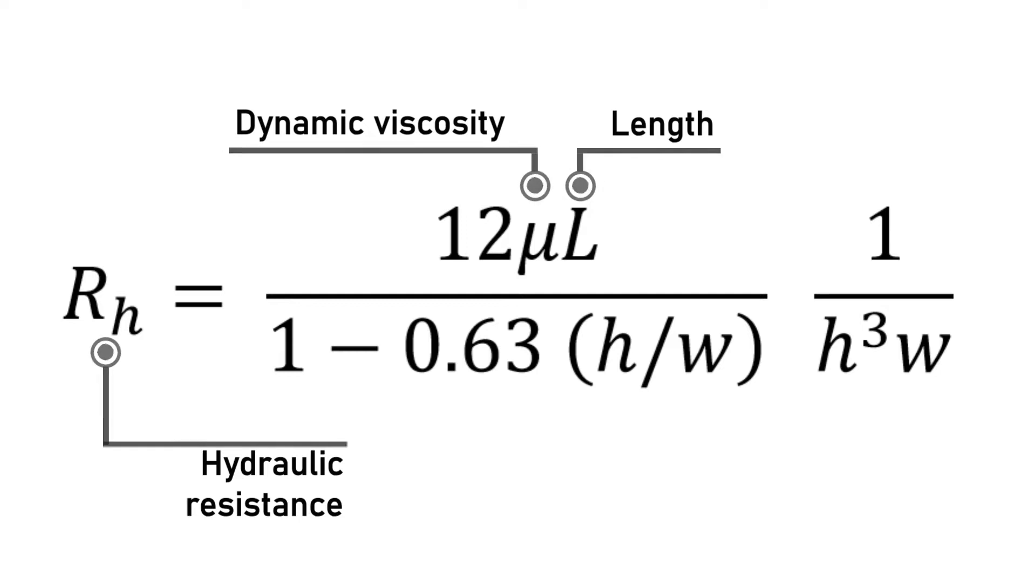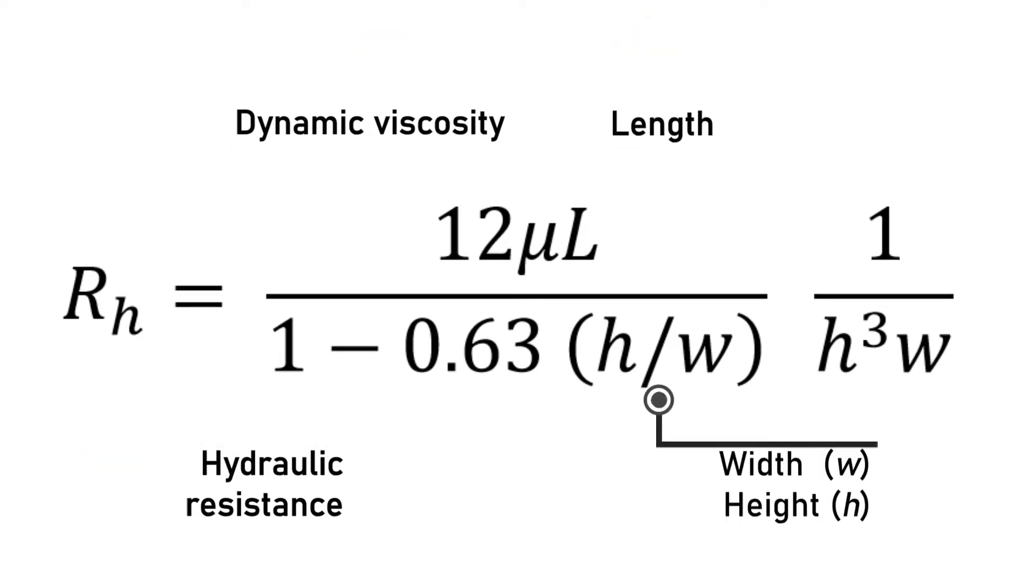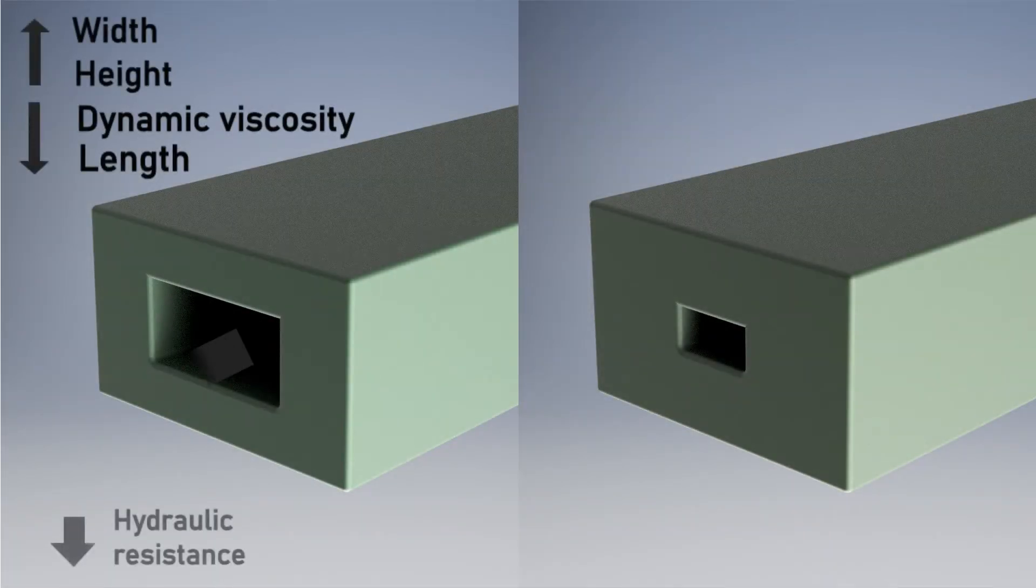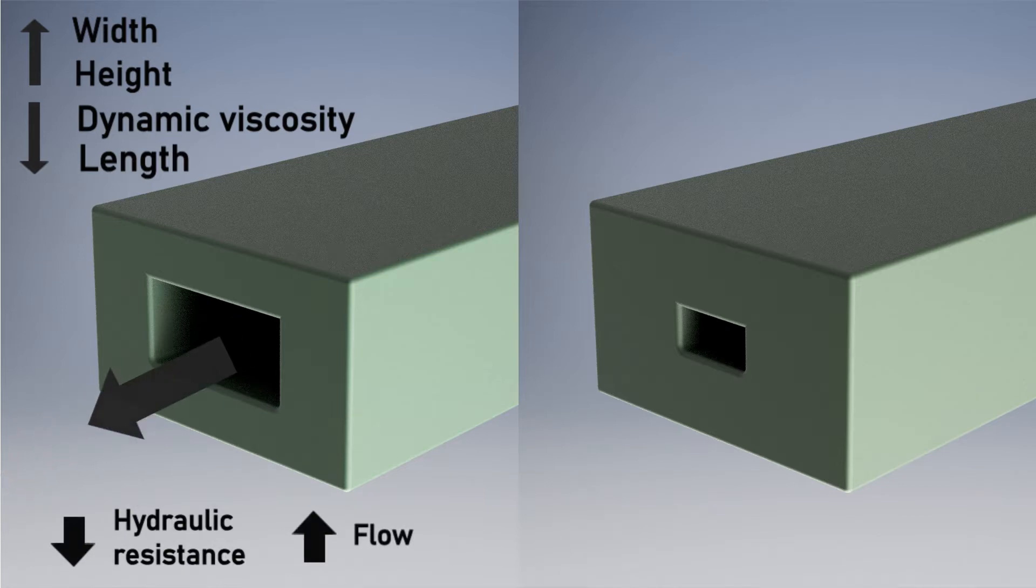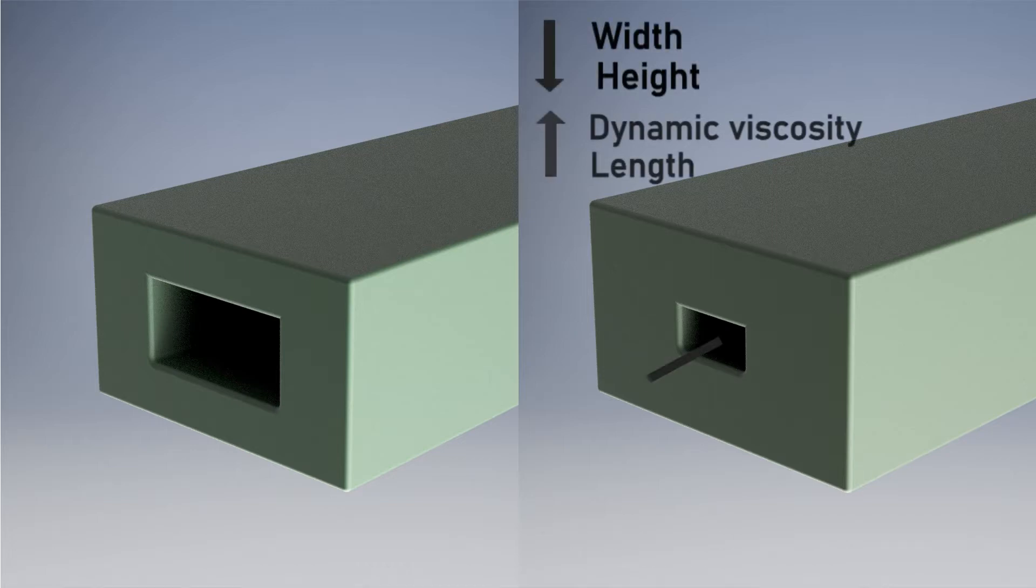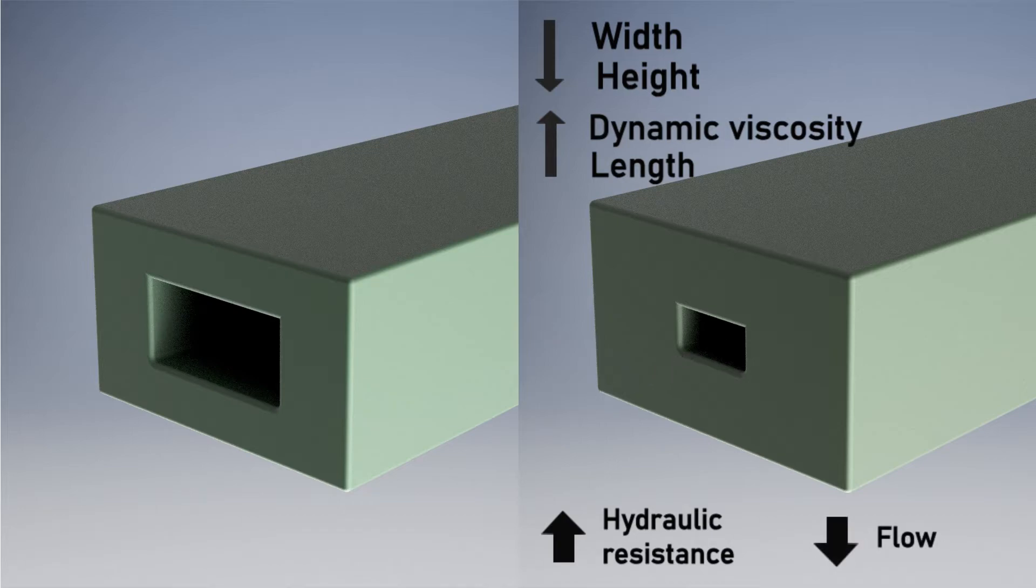The length and viscosity are directly proportional to the resistance, and instead of the radius, the height and the width are inversely proportional to the resistance. This means that a bigger height and width, and a lower length and viscosity will result in higher flow, like we see on the left. Also, a lower height and width, along with higher length and viscosity, means that the flow will be reduced, like we see on the right side of the screen.